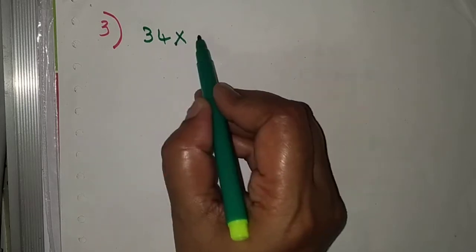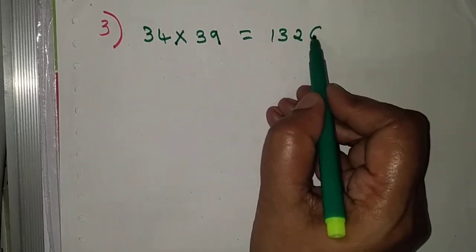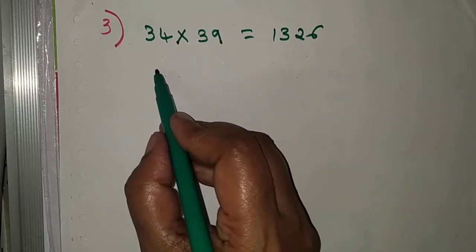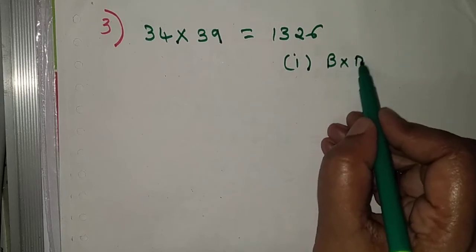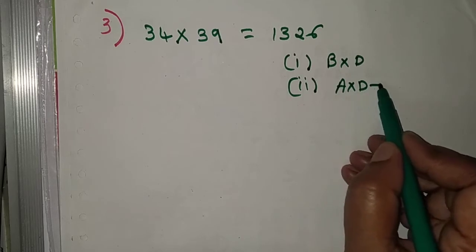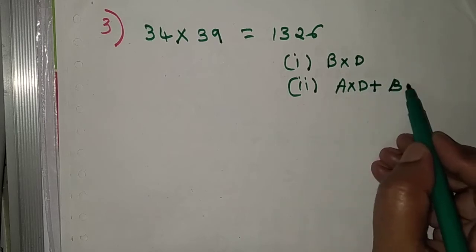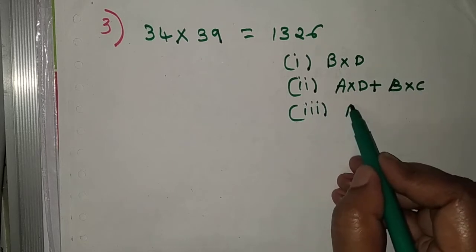Third problem: 34 into 39, and the answer is 1326. Same three steps apply: first is B into D, second is A into D plus B into C, third is A into C. Writing 34 and 39, we label A as 3, B as 4, C as 3, D as 9.